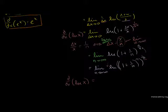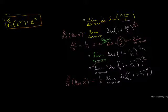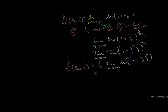The derivative using the limit. The derivative of natural log of x. This is the limit. The limit as n approaches infinity. This equals 1 over x.